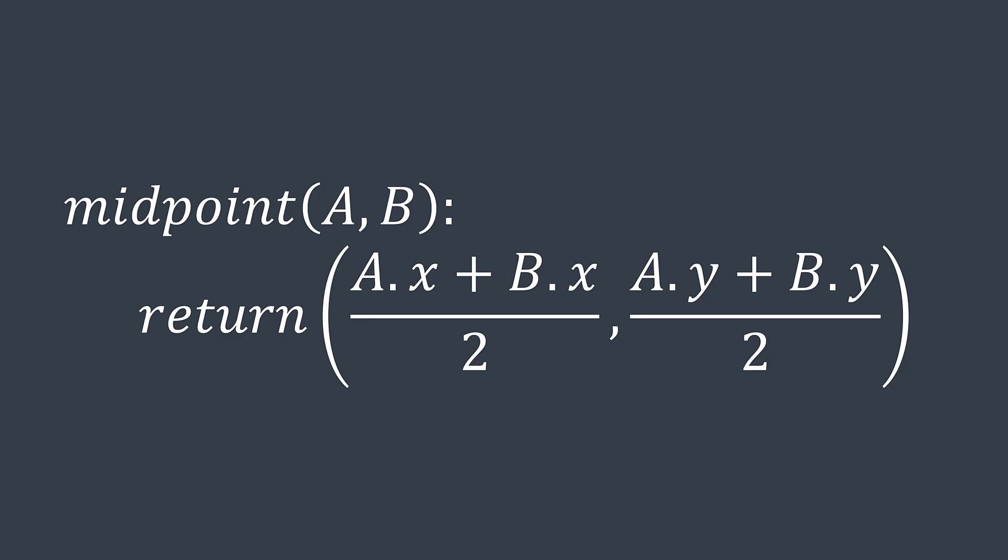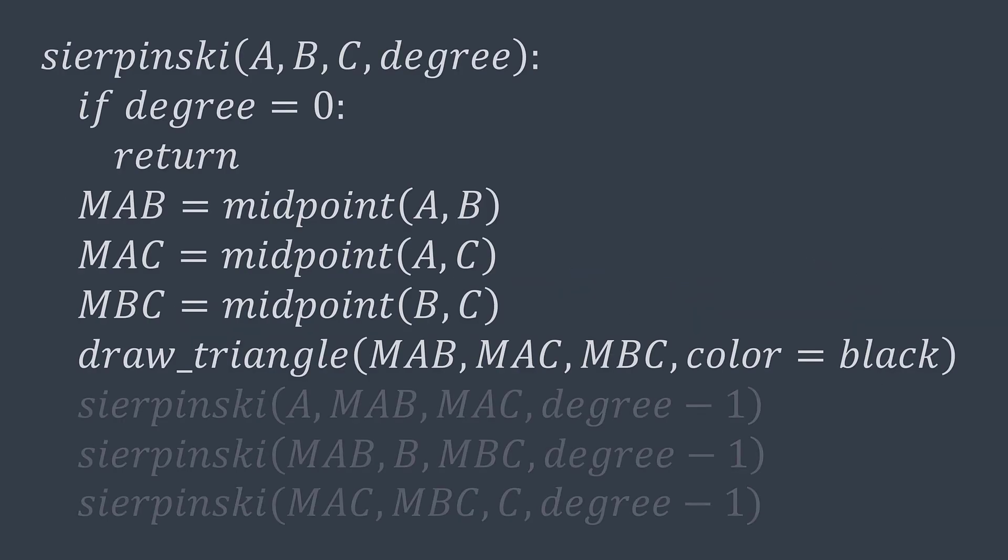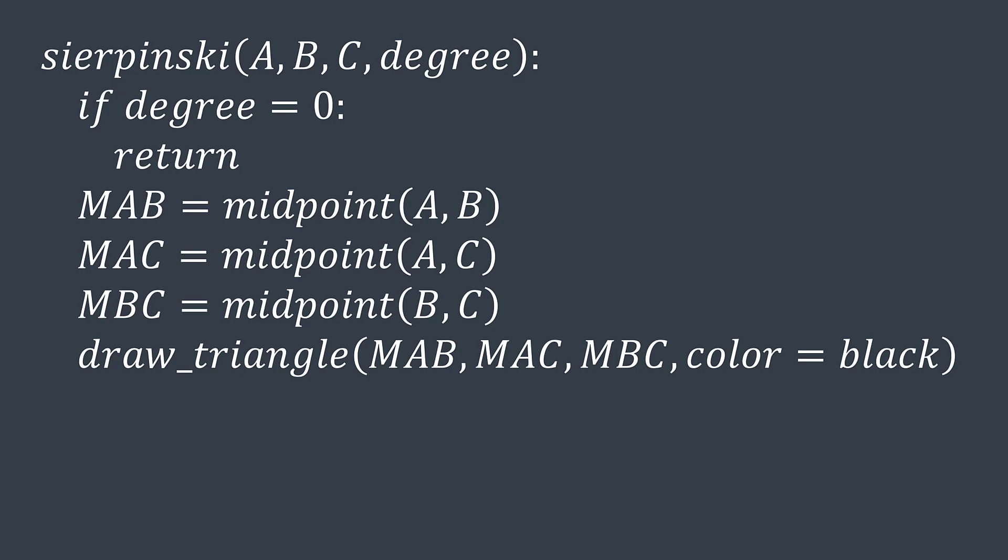Now that we have midpoints, we delete the triangle that they form. For that, we can just draw a triangle of opposite color, black for example.